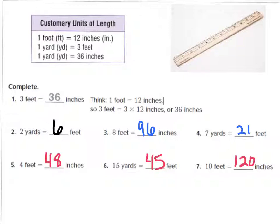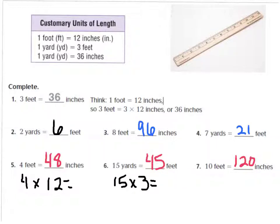Number 5 says 4 feet equals — you should have 48 inches. Because 1 foot equals 12 inches, so 4 times 12 gives me 48 inches. For number 6, it says 15 yards, and it would equal 45 feet. In 1 yard there are 3 feet, so 15 times 3 gives me 45. And number 7: 10 feet equals 120 inches. In 1 foot it's 12 inches, so 10 feet times 12 inches gives me 120. I hope you got those right!